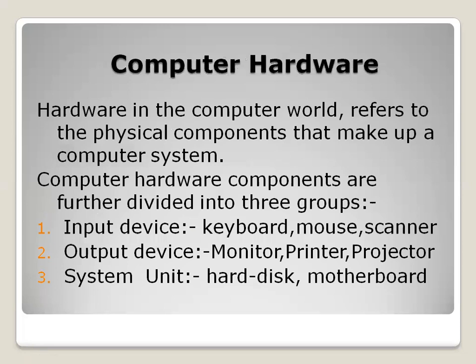Computer hardware refers to the physical components you can touch, unlike software which is imaginary. Hardware includes computer monitors, laptops, keyboards, and mouse — things you can physically touch. It is divided into three parts: input, output, and system. Input devices include the keyboard, mouse, and scanner. Output includes the monitor and printer. The system unit includes the SMPS and motherboard.